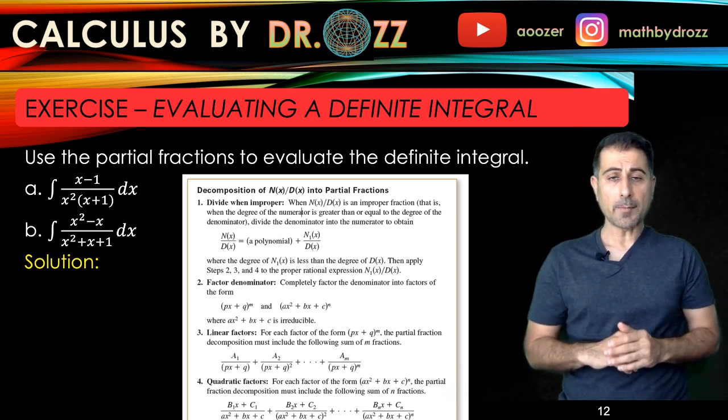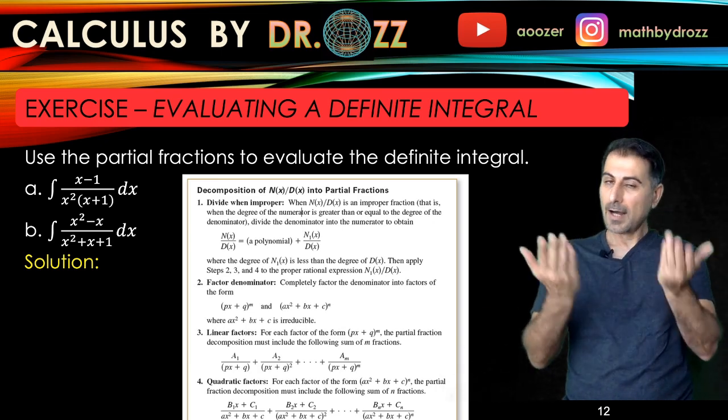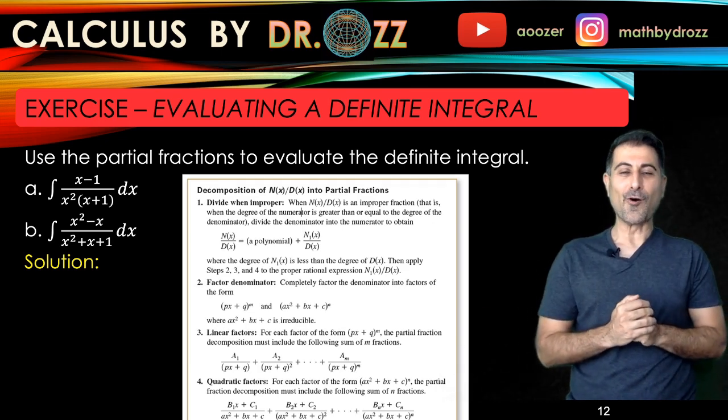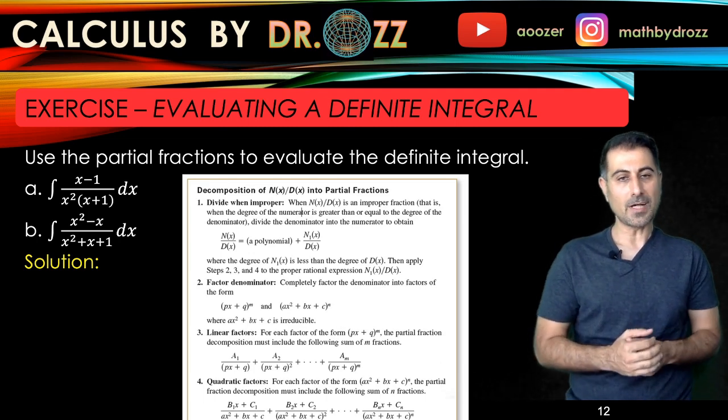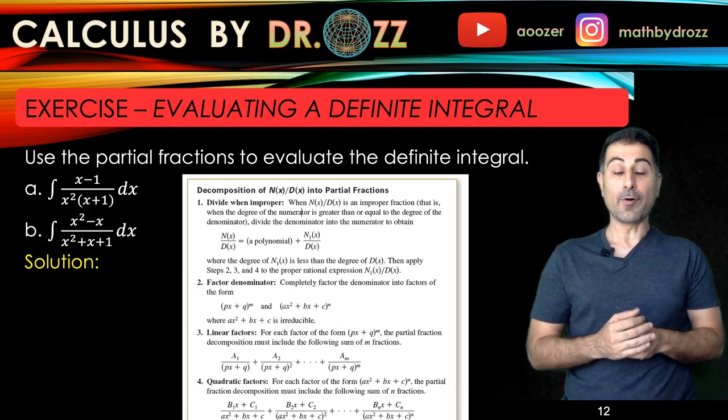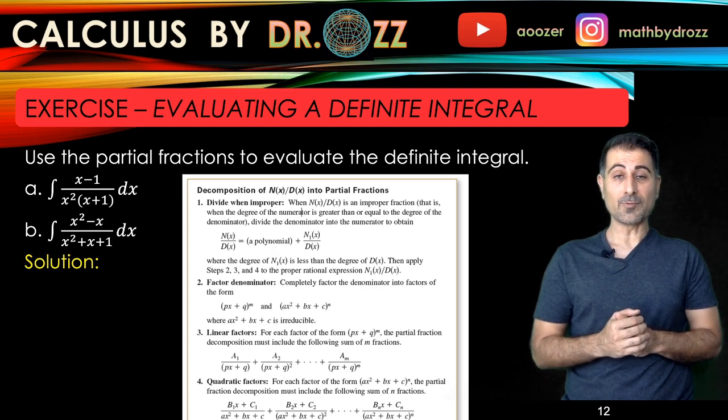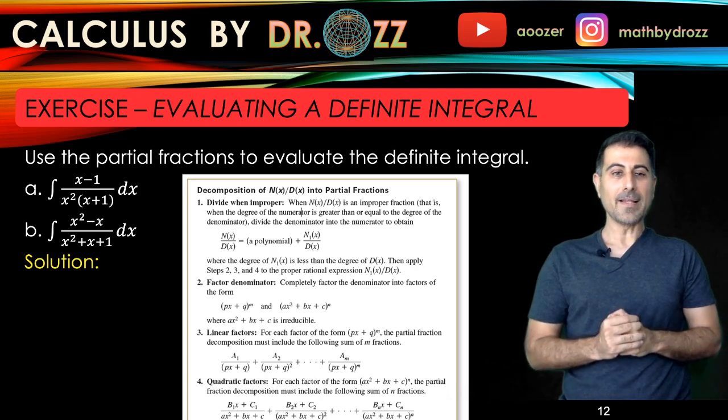But let's check the other two items as well. Once you decide that the rational function is proper, then you're going to factor the denominator as much as you can. You may run into linear and quadratic factors, and for each case, you have a specific guideline. A copy of this guideline is found in the lecture notes and in the e-book. Please check that and have it ready. All right, let's get started.